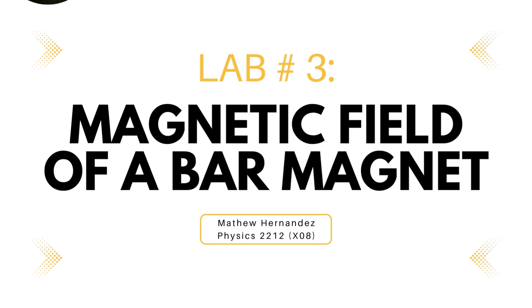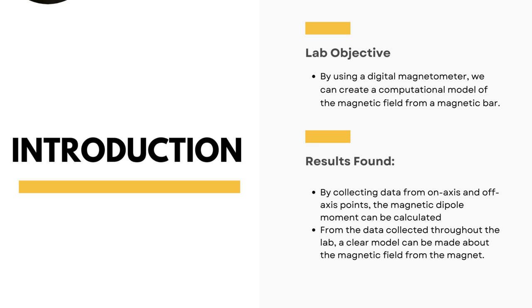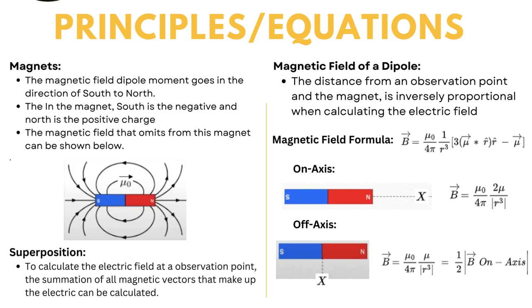Hi, my name is Matthew Hernandez, and this is the third lab for Physics 2212 going over the topic of magnetic field of a bar magnet. The objective of this lab is, through the use of a digital magnetometer, we're able to create a computational model of the magnetic field that emits from a bar magnet. Not only this, but we're actually able to calculate the magnetic dipole moment that comes from our magnet.